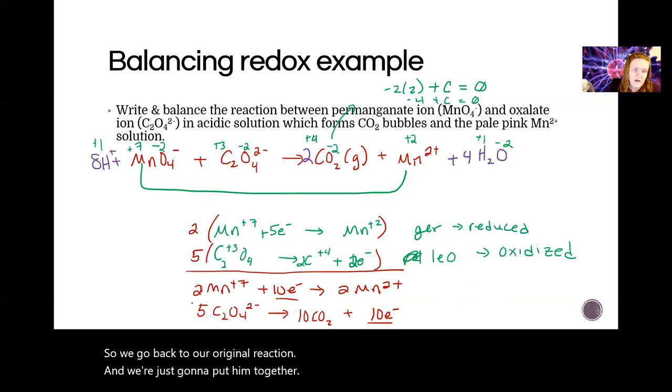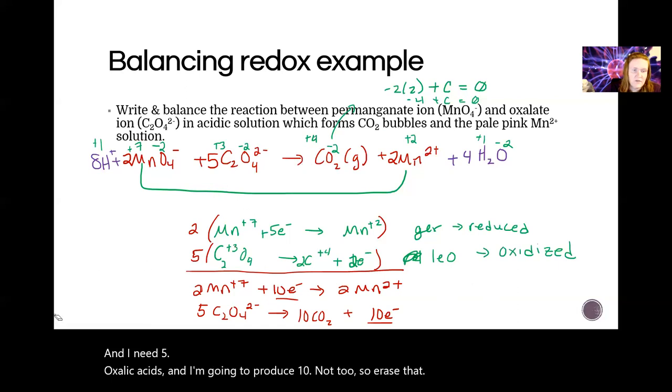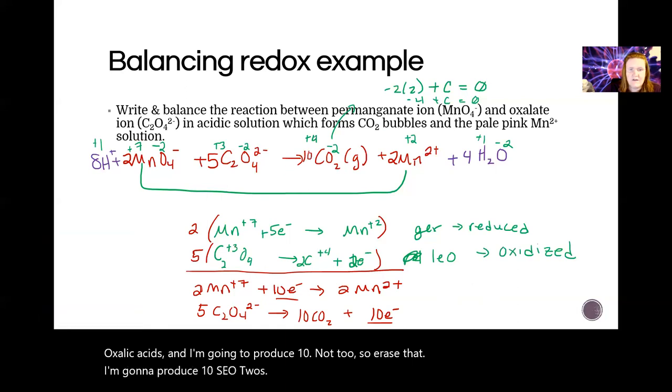So if we have two Mn7+, I need two of these things, and I'm going to produce two of these. And I need five oxalic acids, and I'm going to produce 10, not two, so I'll erase that. I'm going to produce 10 CO2. Okay, so that takes into account everything, and the last step is always a final double check.